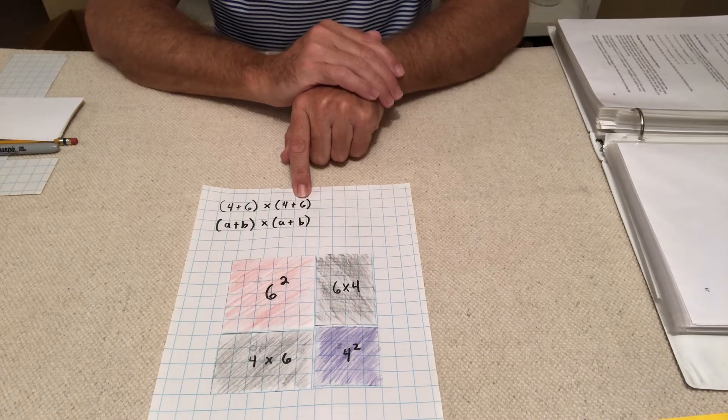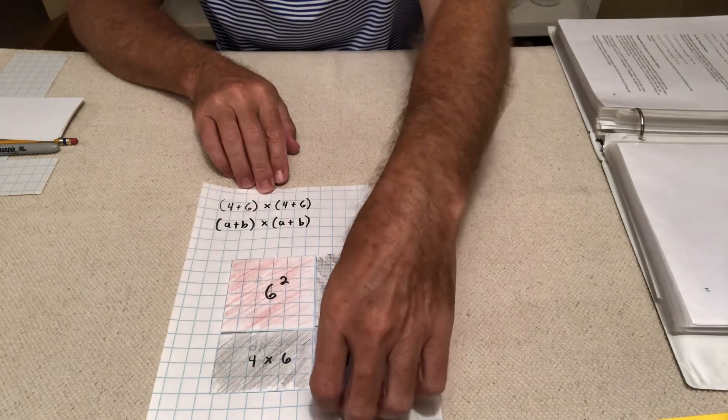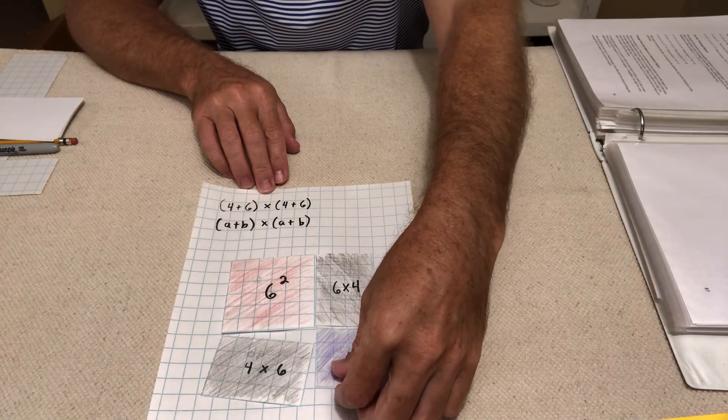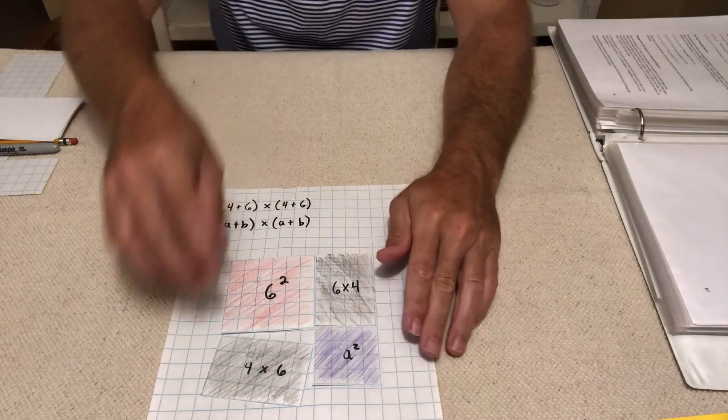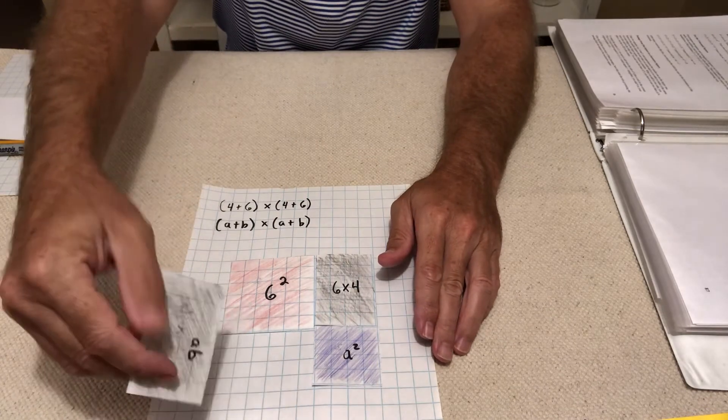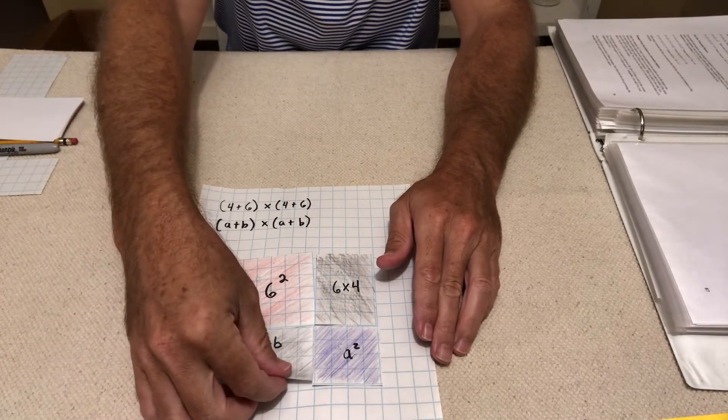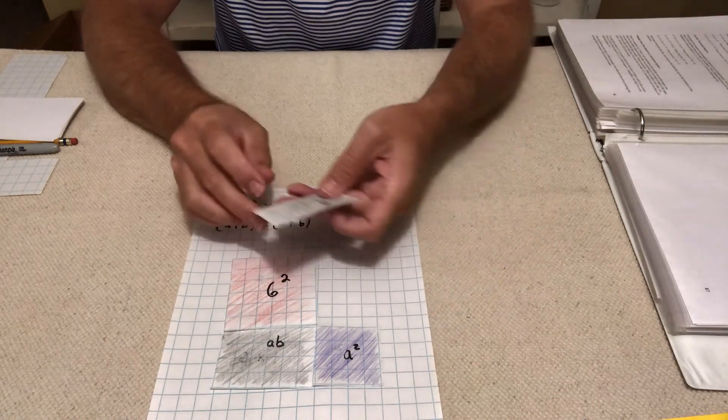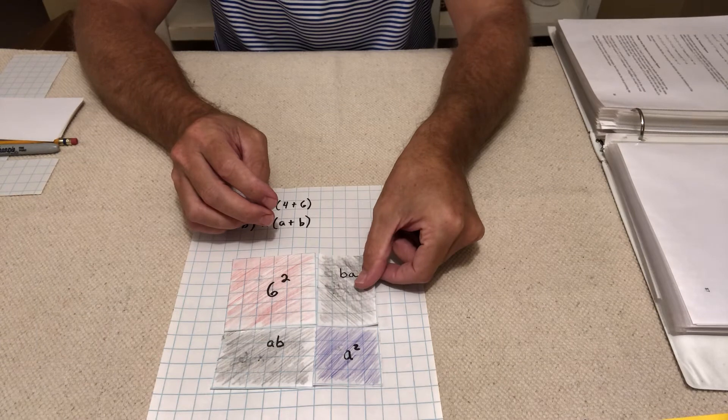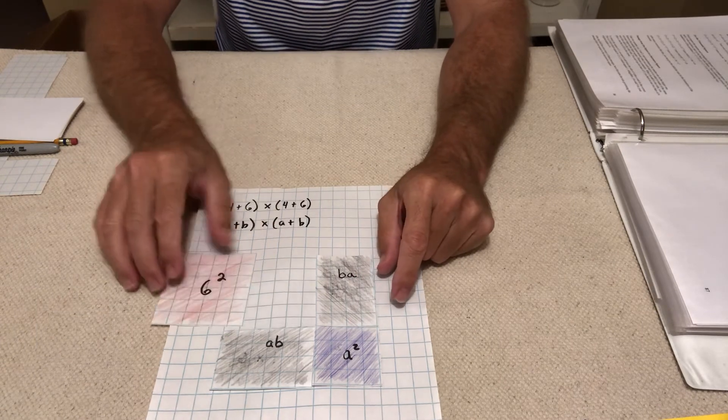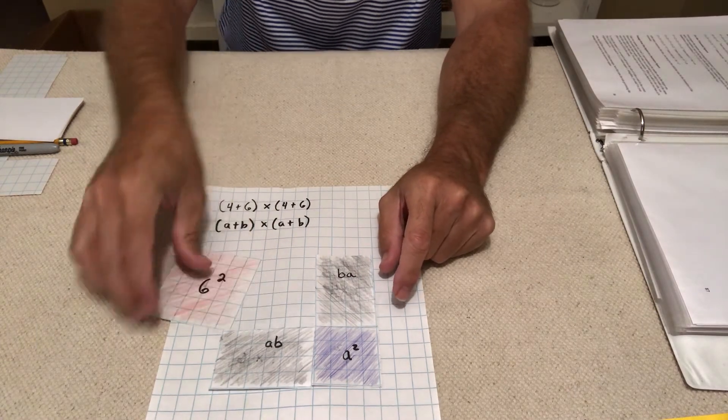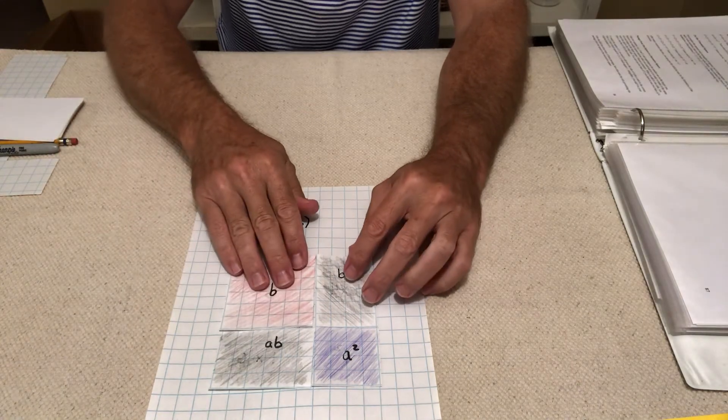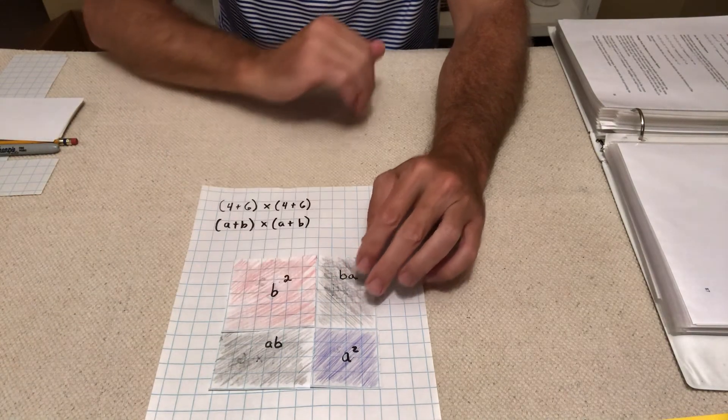And then for my substitution, 4 squared would be A squared. And 4 times 6 would be AB. 6 times 4 would be BA. And 6 squared, if we used our substitution, we used our variable would be B squared.